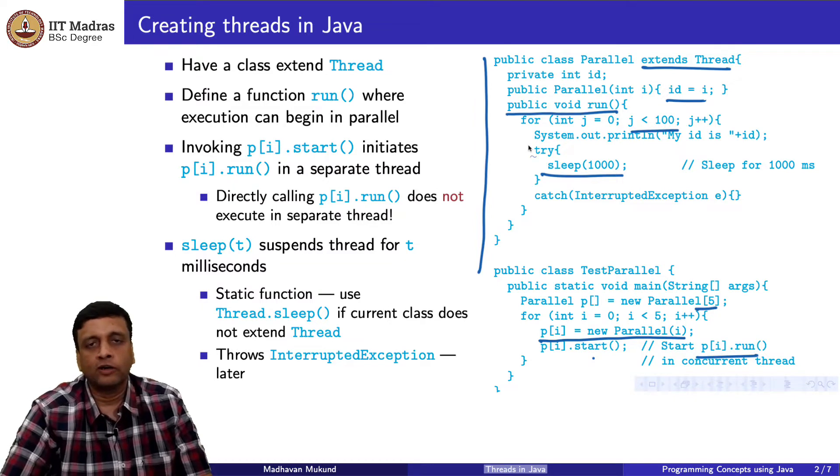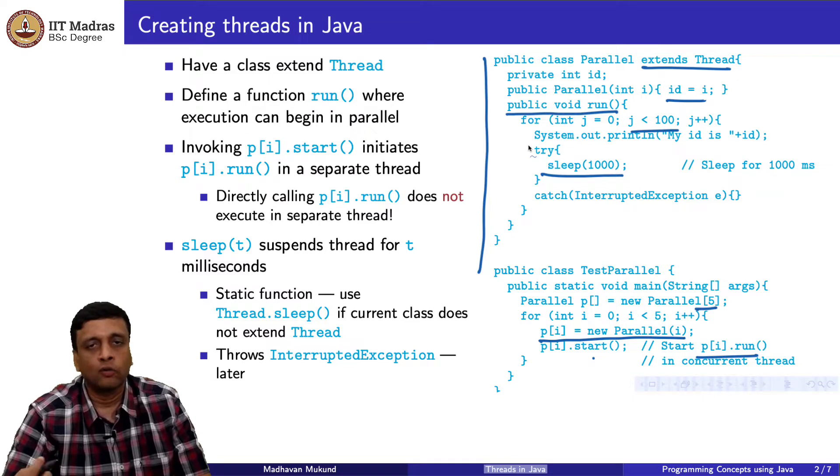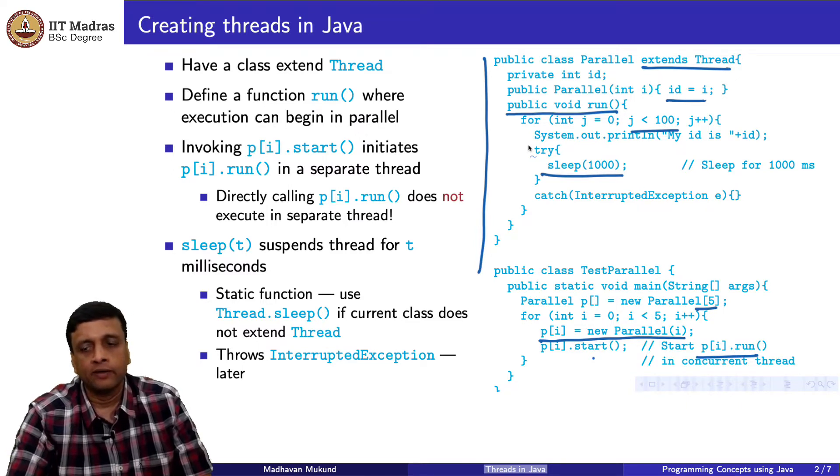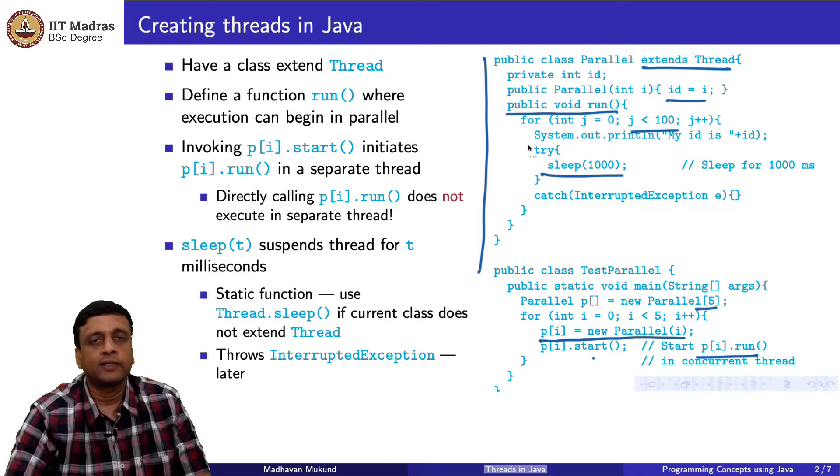I can of course call p[i].run but if I do p[i].run, it will not happen in parallel. It will be like a normal function call where it will wait for p[i].run to execute and then come back. If I do p[i].run, then the 0th process will print its id 100 times, then process 1 will print it 100 times and so on sequentially.